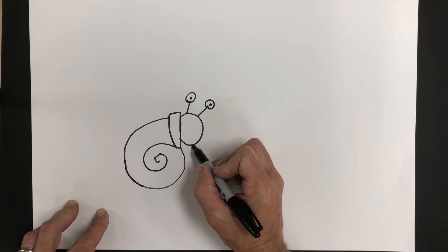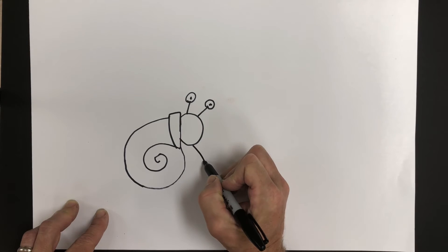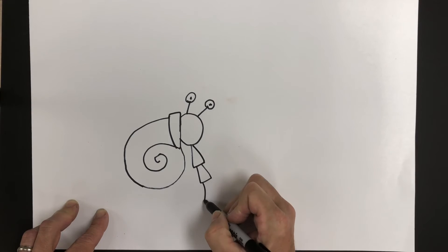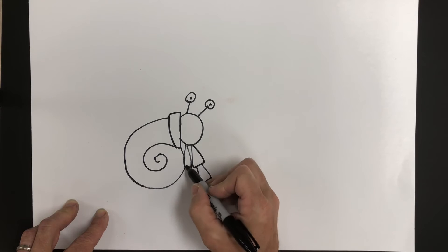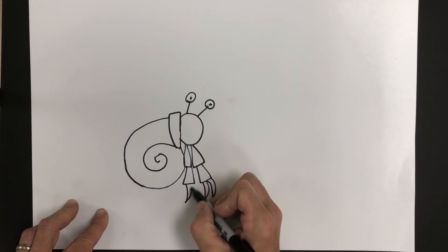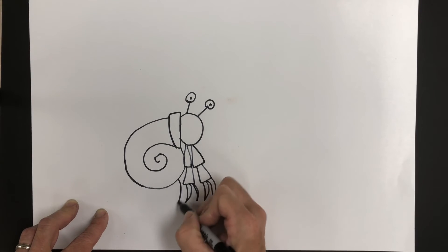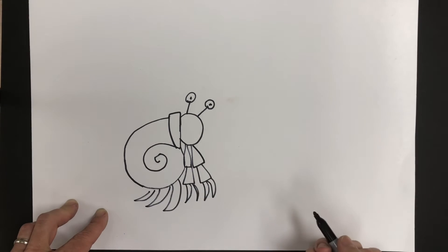And then I'm going to make little triangles connected together for the legs. So I do two triangles and then the claws at the end. I'll do the same thing for the other leg and then also add some little triangles for the legs in the back.